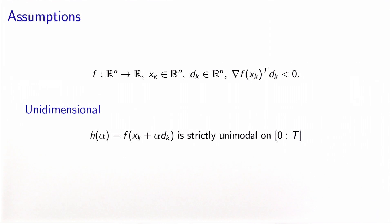We are trying to minimize an objective function f of n variables. We are at a current iterate x, and we have calculated the direction d, which happens to be a descent direction, meaning that the directional derivative of f along d is strictly negative. The problem we have to solve is the calculation of the step along d, which is a unidimensional problem. We have a function h, equal to the value of f obtained when we perform a step alpha along direction d starting from x. We will assume that h is strictly unimodal in a given interval.